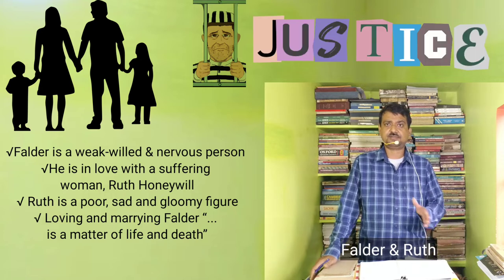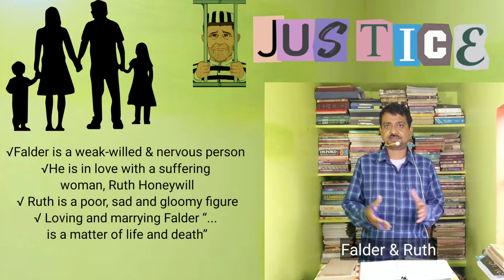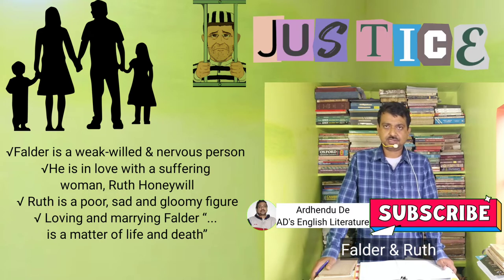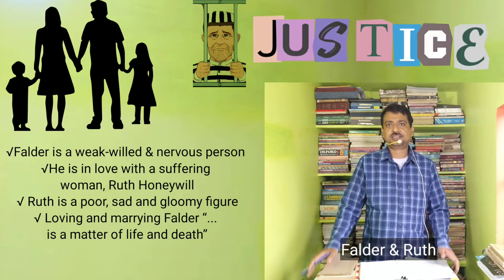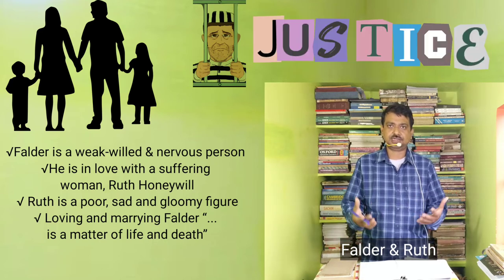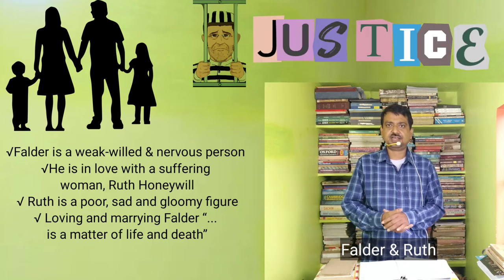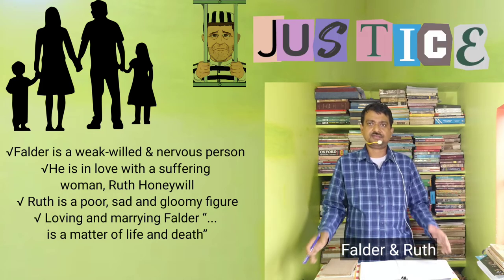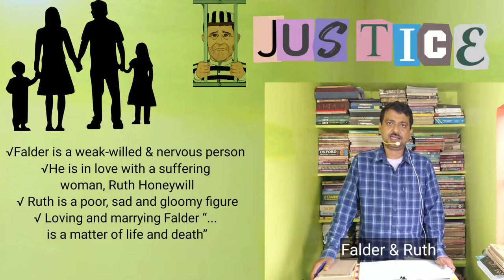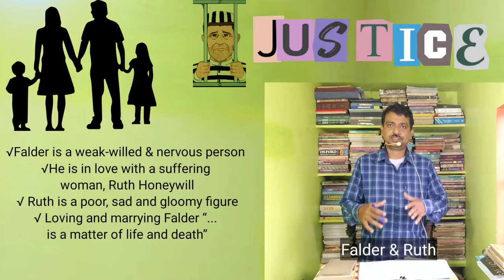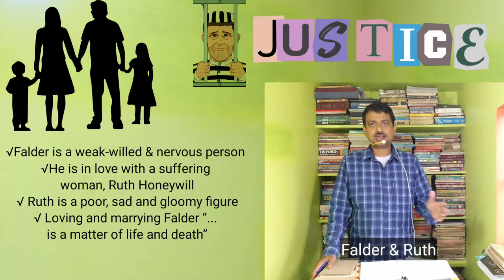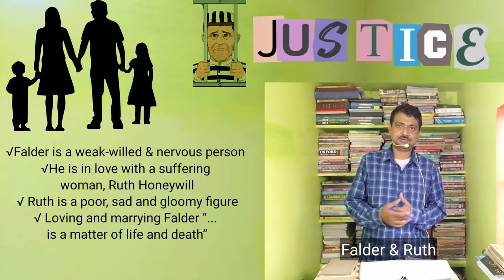In Galsworthy's 'Justice', the central protagonist Falder is a weak-willed and nervous person with a good intention of providing relief to a suffering woman, Ruth. In so doing, he commits a crime which leads him to prison and to death, making him a pathetic figure rather than a tragic one. Falder everywhere represents 'everyman' — the society is the villain, and individuals who are subjects of that society can become its victims.